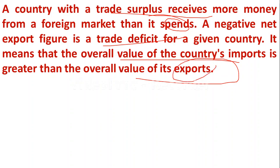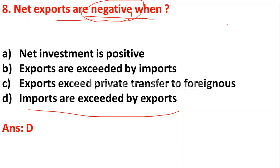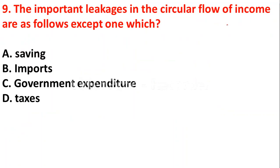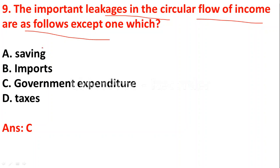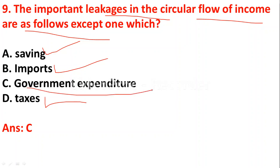The next question: the important leakages in the circular flow of income are as follows except one — A) saving, B) imports, C) government expenditure, D) taxes. Saving is a leakage to national income, imports are a leakage to the circular flow, and taxes are also leakages. Except government expenditure, the remaining three — saving, imports, and taxes — are leakages of the circular flow of income.